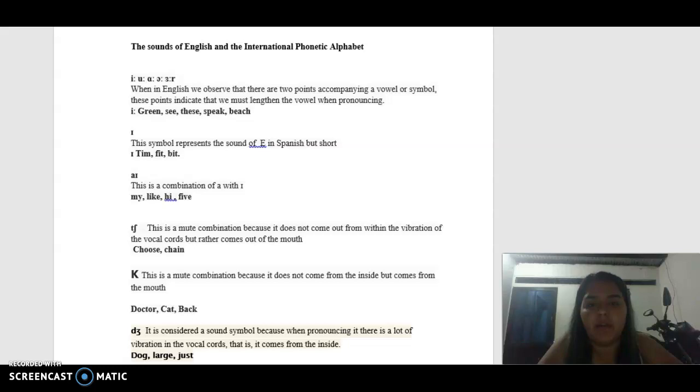When in English we observe that there are two points accompanying a vowel or symbol, these points indicate that we must lengthen the vowel when pronouncing. E not is E, it's is E.